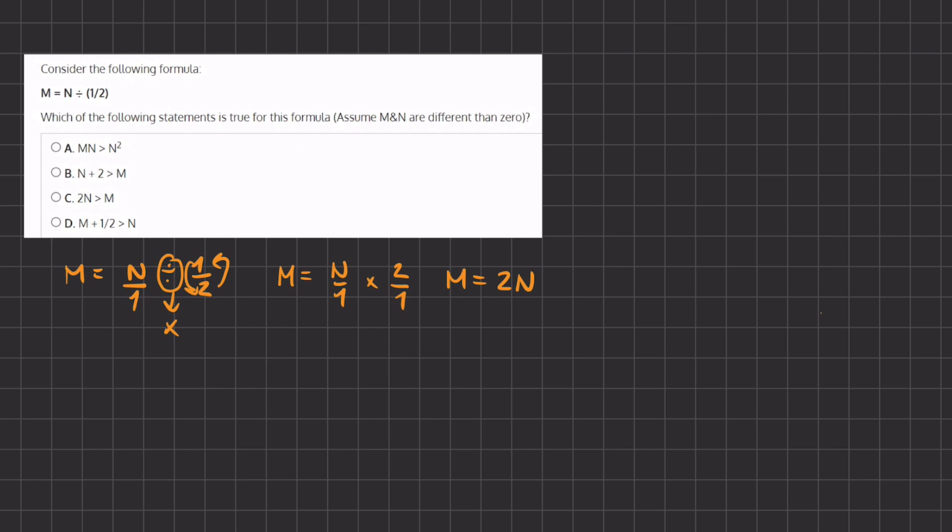Alright, so now let's take a look at our options, let's take a look at option A. Now if we replace M, our first term here, with 2N, and we continue writing the expression,